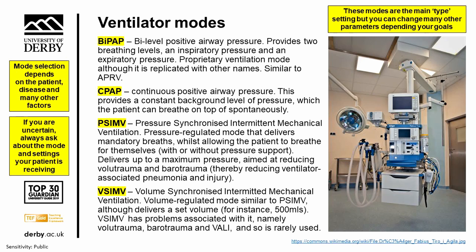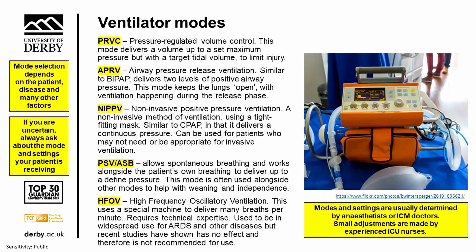Some of the older modes of ventilation include pressure synchronized intermittent mechanical ventilation and volume synchronized intermittent mechanical ventilation. These are older modes but you may still see them on some ventilators. They will deliver a standard amount of breaths or synchronize with the patient up to a maximum pressure or maximum volume. However, they are older modes, and we do see people who develop volutrauma or barotrauma — general lung trauma — because of the ventilator system they are on.